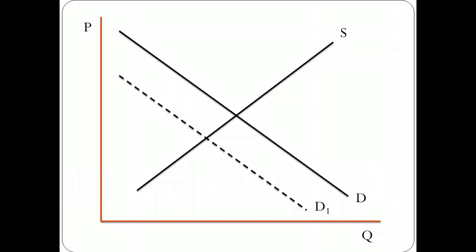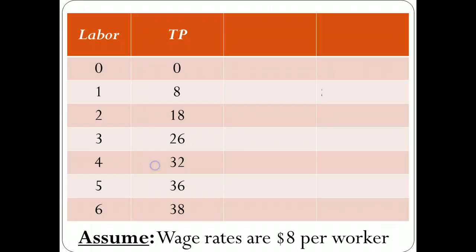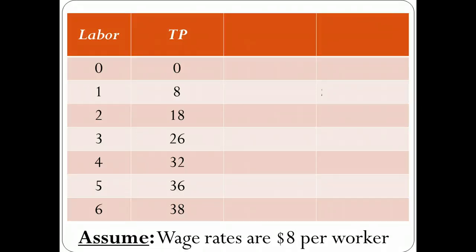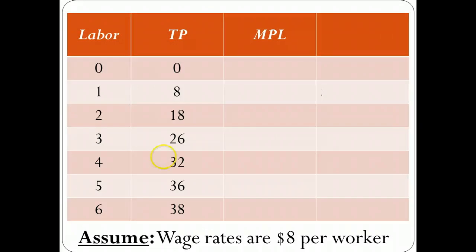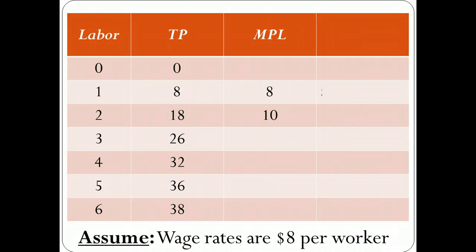Now, how do we derive the demand curve? We look at total product — the amount of output that can be created by a given set of workers. With zero workers, there's zero product. One worker produces eight units. Two workers produce 18 units between them. Three workers produce 26 units, and so on. From this, we can identify the marginal product of labor — how much additional product is produced by one more unit of labor. The first worker has a marginal product of eight, the second has ten, the third has eight, the fourth has six, and so on.